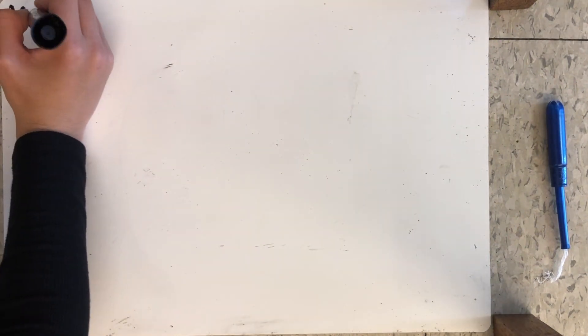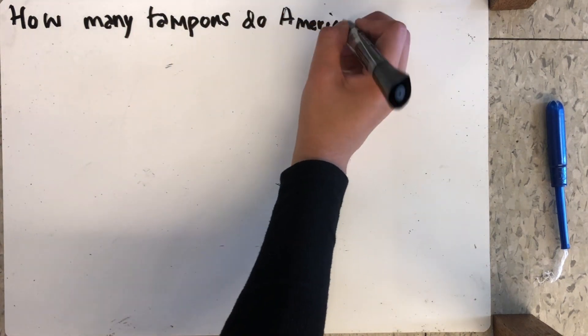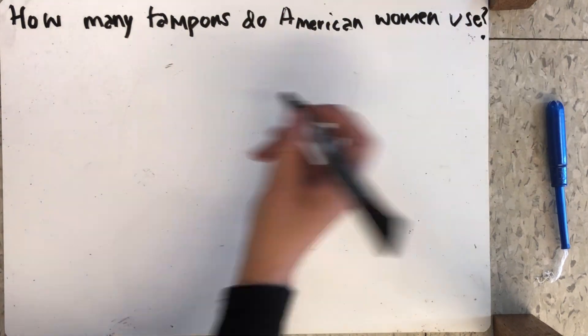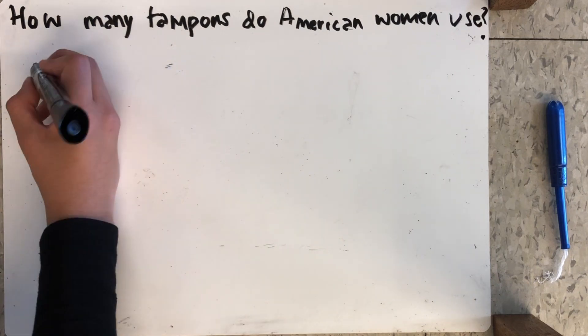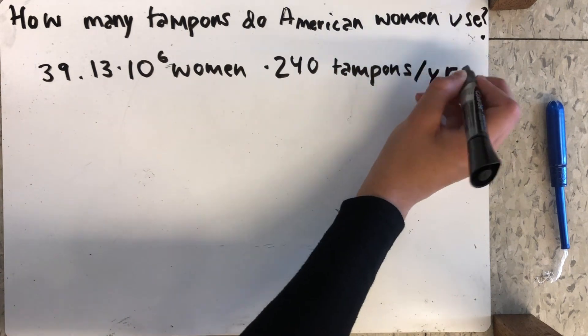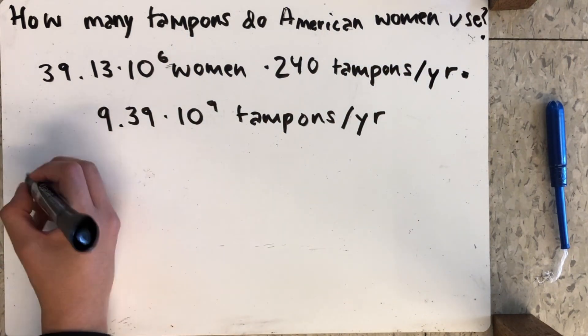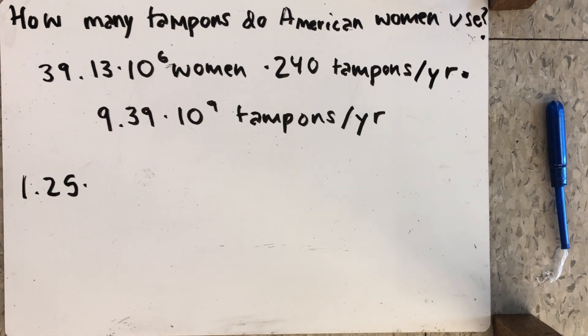But is that actually as much as it seems? We wanted to test this, so we put American women to the test. We wanted to see how many years American women would take to fill up Stuy. First, we found out how many tampons they use. There are 39.13 times 10 to the 6 women in America who use 240 tampons per year each. Multiplying these numbers shows that American women use 9.39 times 10 to the 9 tampons per year.